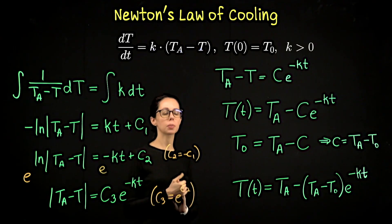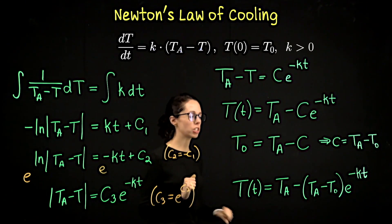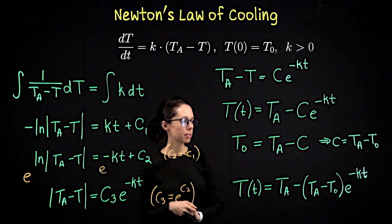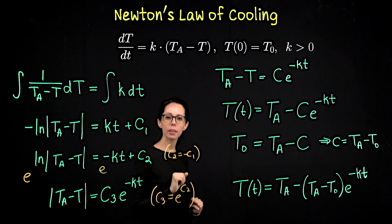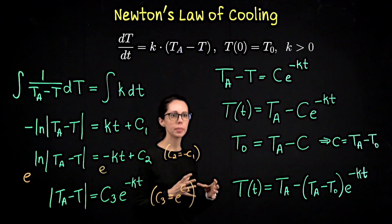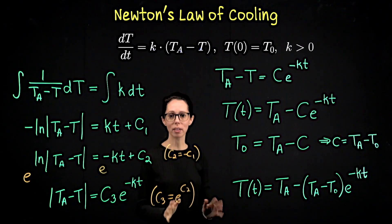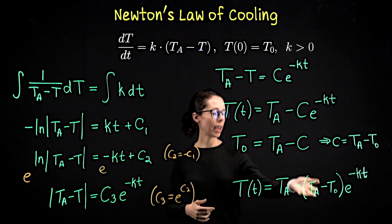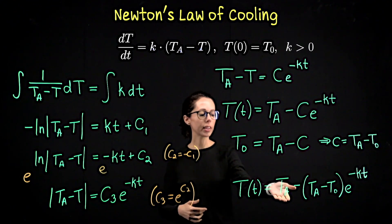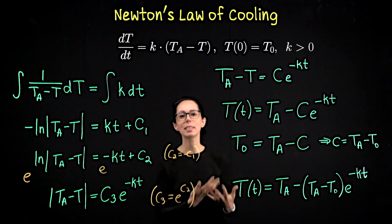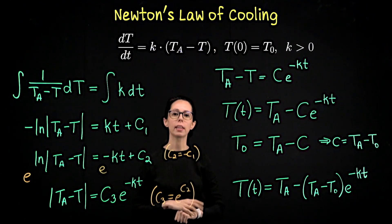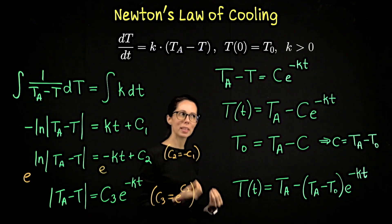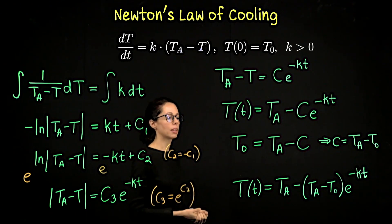Let's look at a couple of special cases. First, verify the initial condition: when little t is zero, e^0 = 1, so the ambient temperatures cancel and we're left with the initial temperature T₀ — that makes sense. What if the coffee is poured at exactly room temperature? Then T₀ = T_a, so T_a − T₀ = 0, the second term vanishes, and the temperature over time is just the ambient temperature — it never heats up or cools down. This is an equilibrium solution: plugging T_a into the differential equation gives a rate of change of zero.